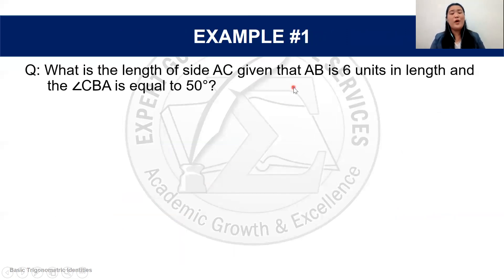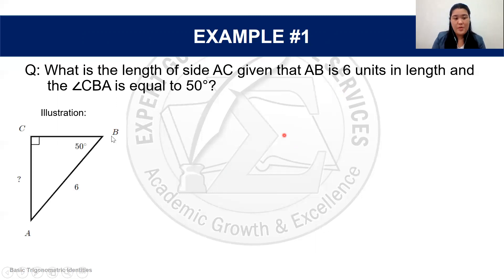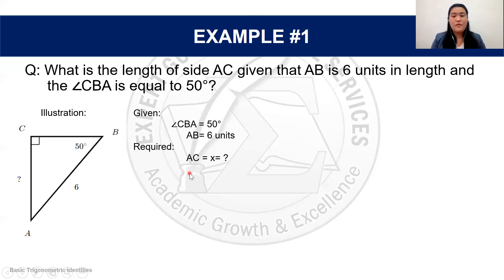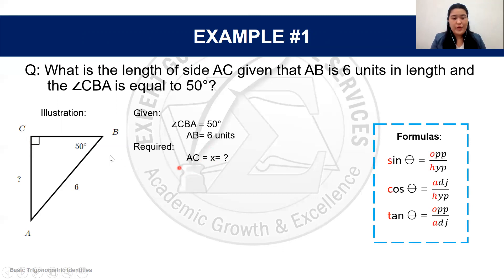Let's have an example. What is the length of side AC, given that AB is 6 units in length, and that angle CBA is equal to 50 degrees? Let's first illustrate our right triangle and list down our given: 50 degrees for angle CBA, and AB equals 6 units. AB is our hypotenuse. What we're missing is side AC, which we can let be unknown as X. We're also given 50 degrees.